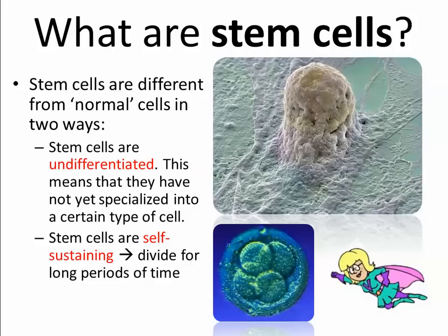Stem cells are also self-sustaining. A stem cell has a choice: it's either going to specialize and turn into another cell, or it's going to divide and continue producing more stem cells. If you run out of stem cells, then you can't actually produce any more specialized cells. So some stem cells divide into new stem cells, and others become specific specialized cells.